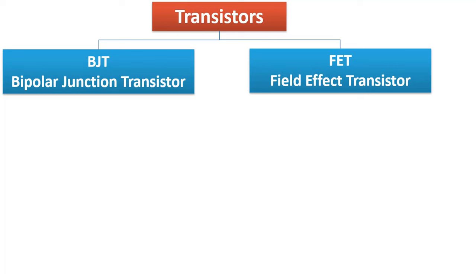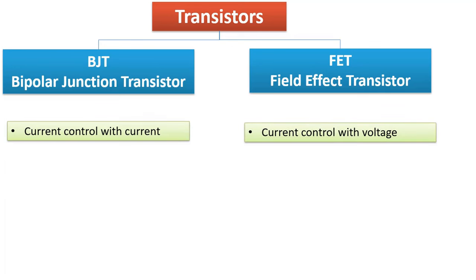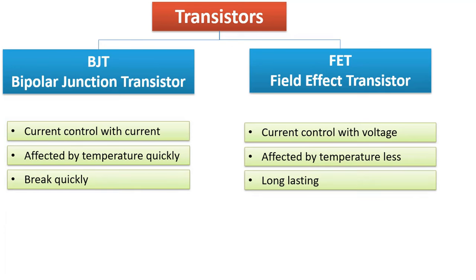The task of both transistors is to provide current control or voltage amplification as a switch. Briefly, BJTs control current with current, while FETs control voltage and current. BJTs are quickly affected by temperature, while FETs are less affected by temperature. As such, BJTs degrade quickly, while FETs are more durable and long-lasting.